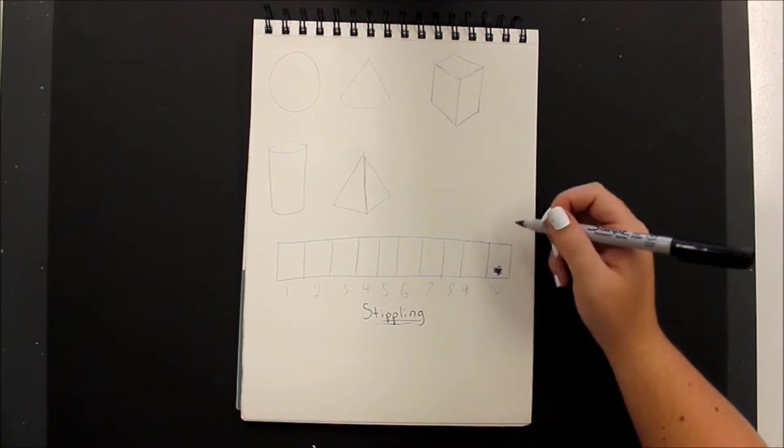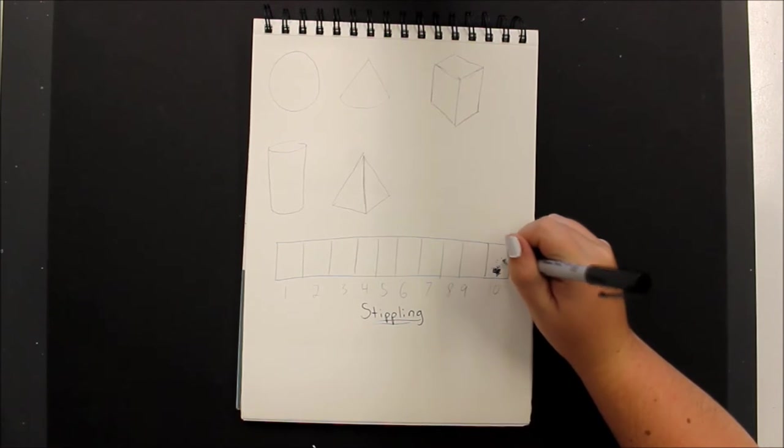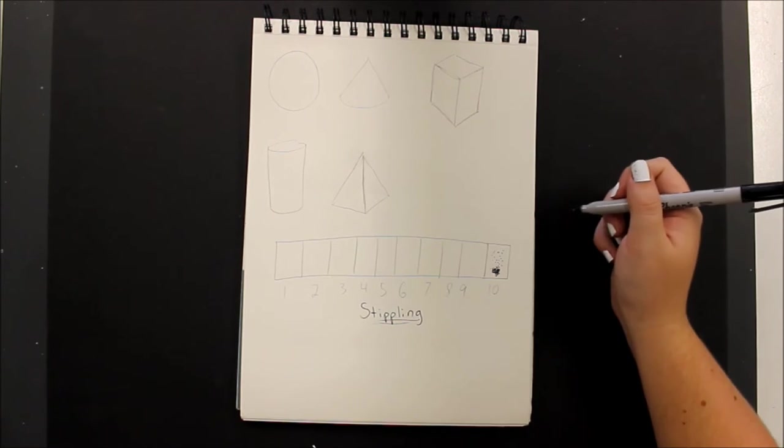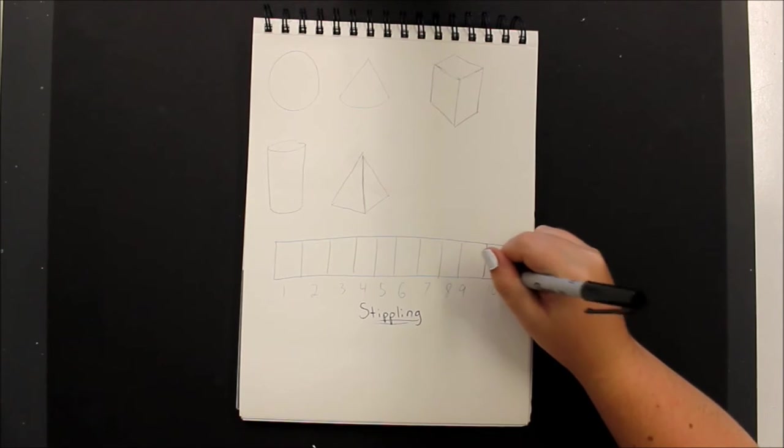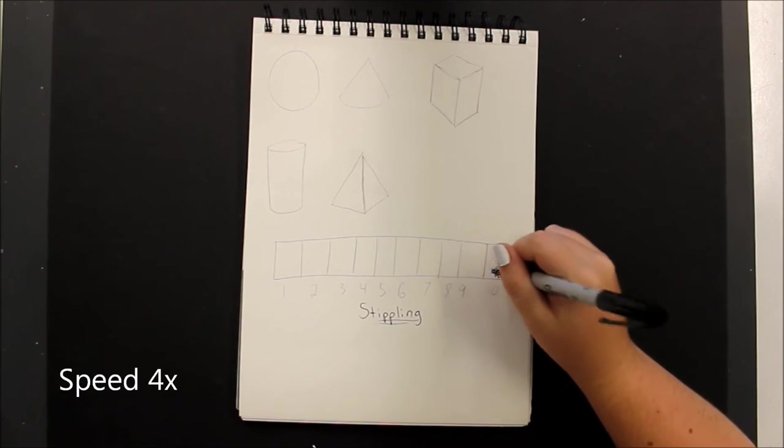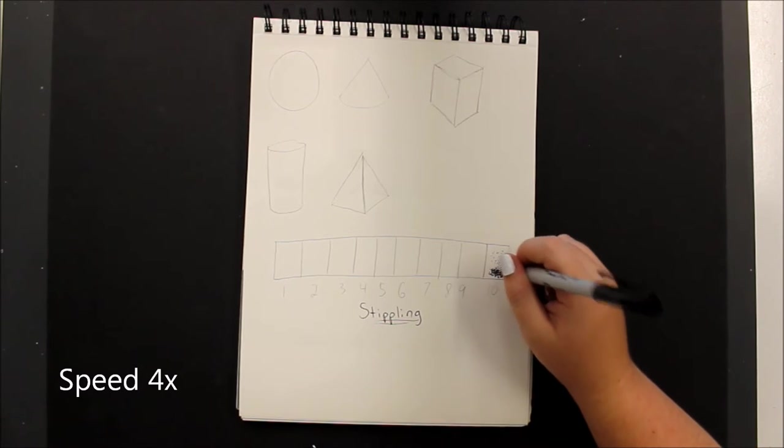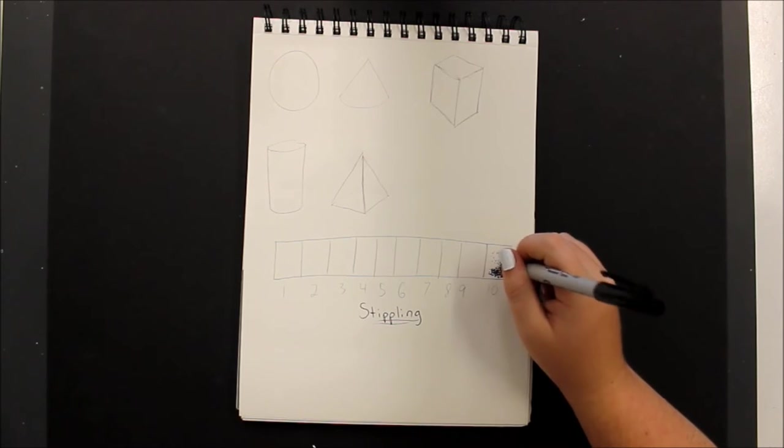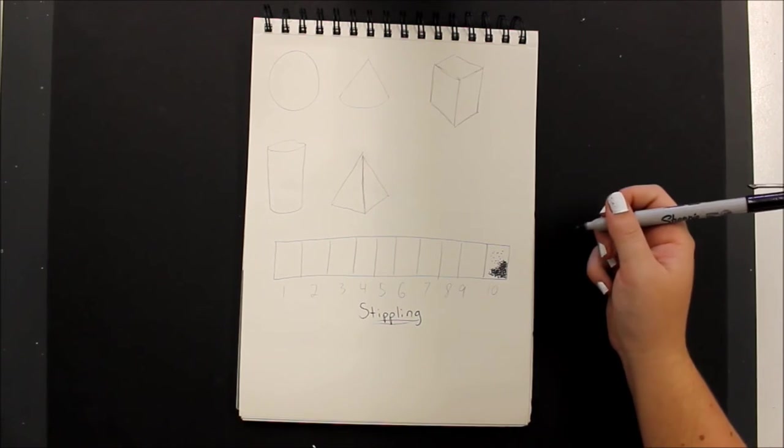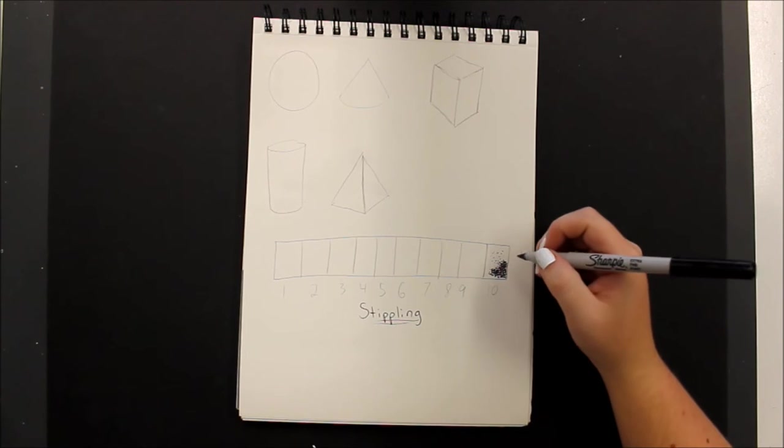And just to kind of show you, further apart dots appear lighter. So the whole square or rectangle should be pretty much filled with dots. And just for the sake of time for showing you all the values and how to accomplish them, I'm not going to fill in the whole square, but I want you to fill in the whole square.